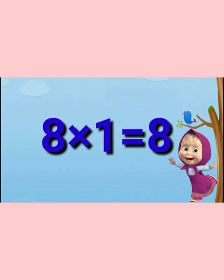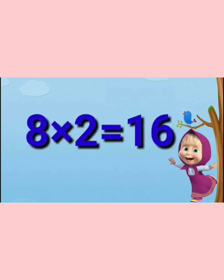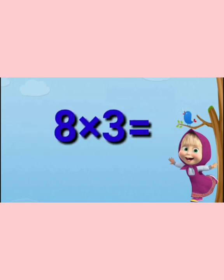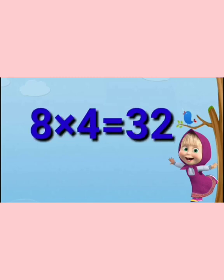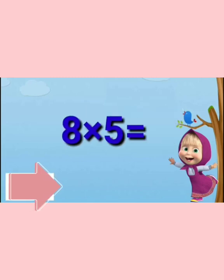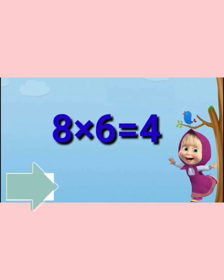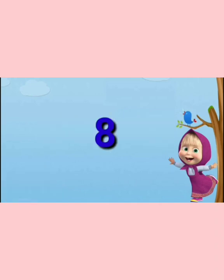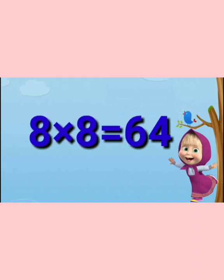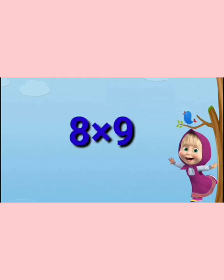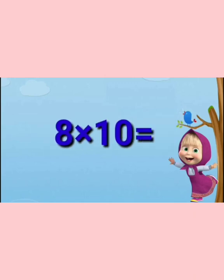Table of 8: 8 ones are 8, 8 twos are 16, 8 threes are 24, 8 fours are 32, 8 fives are 40, 8 sixes are 48, 8 sevens are 56, 8 eights are 64, 8 nines are 72, 8 tens are 80.